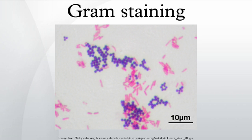Gram staining is not used to classify Archaea, formerly Archaeabacteria, since these microorganisms yield widely varying responses that do not follow their phylogenetic groups. The Gram stain is not an infallible tool for diagnosis, identification, or phylogeny, and it is of extremely limited use in environmental microbiology. It still competes with molecular techniques even in the medical microbiology lab.